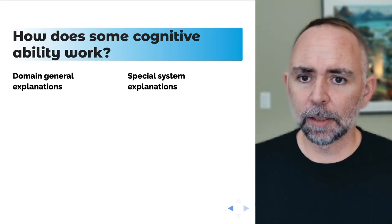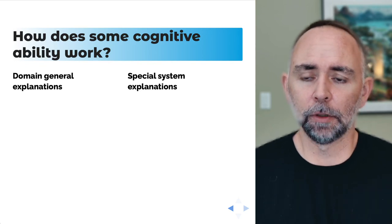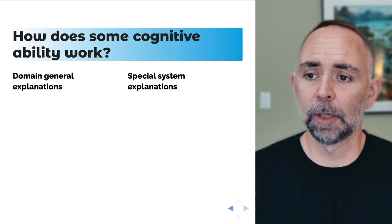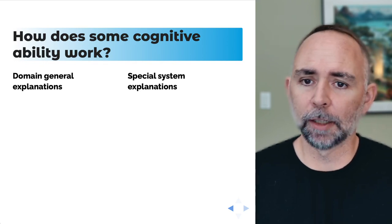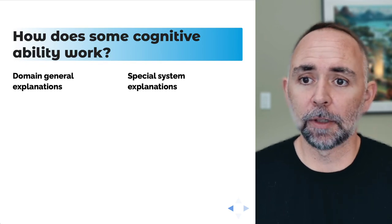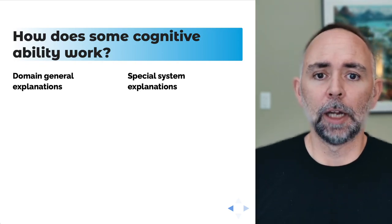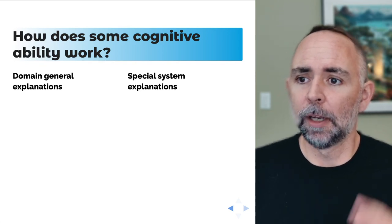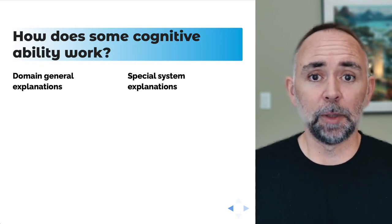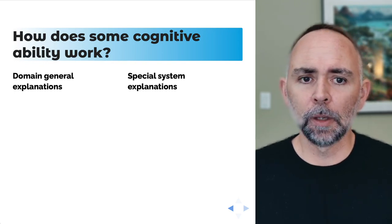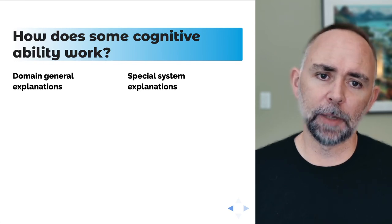We're going to be talking about an example theory of cognition. To set the stage, I want to talk in general about how theories in cognition often get forwarded. Typically there'll be some question about how a particular cognitive ability works — how do people remember things, pay attention, recognize faces, do math? Any one of those topics is an example of a cognitive ability. We'll often find two classes of explanations: domain general explanations and special system explanations.